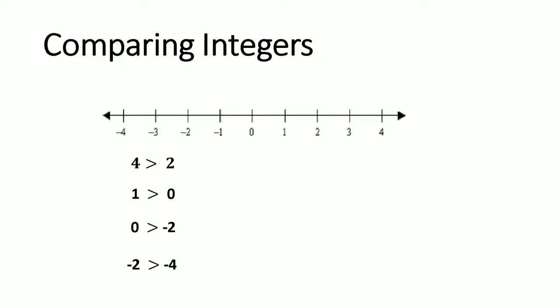Let us look at the reverse case. When comparing 2 and 4, since 2 is to the left of 4, we say 2 is less than 4. Similarly, 0 is less than 1 because 0 is to the left of 1. Can you see why negative 2 is less than 0? Negative 2 is less than 0 because negative 2 is to the left of 0. Negative 4 is also less than negative 2 for the same reason.